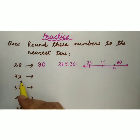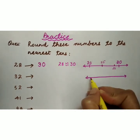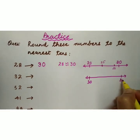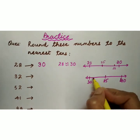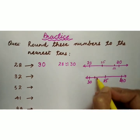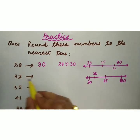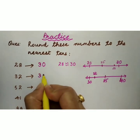Next is 32. 32 ke liye hum ek number line draw kar lete hain. 32 lie kar raha hai. 32 lies between 30 and 40. Aur in ke middle me there will be 35. Aur 32, 35 ke left me kahin lie karega. It will be here. It means that 32 is closer to 30. Toh jab hum 32 ko round off karenge to nearest tens, then it will be 30.